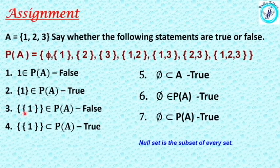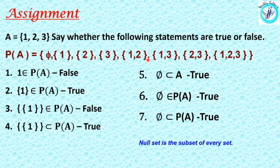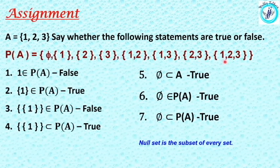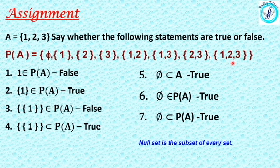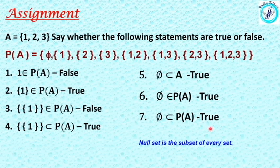Now, we have to write the power set of A = {1, 2, 3}. The power set of A is: null set, {1}, {2}, {3}, {1,2}, {1,3}, {2,3}, and {1,2,3}. Say whether the following statements are true or false — all are true, because the null set is a subset of every set.